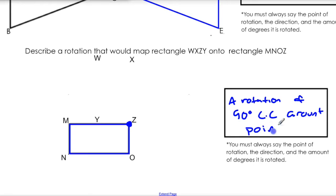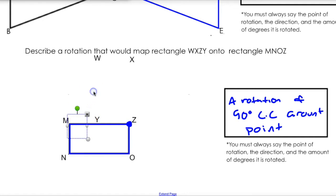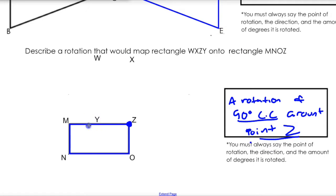Which point did we choose? It was point Z — around point Z. So the direction it went in and where we rotated around — those are the two things you really got to be concerned with.